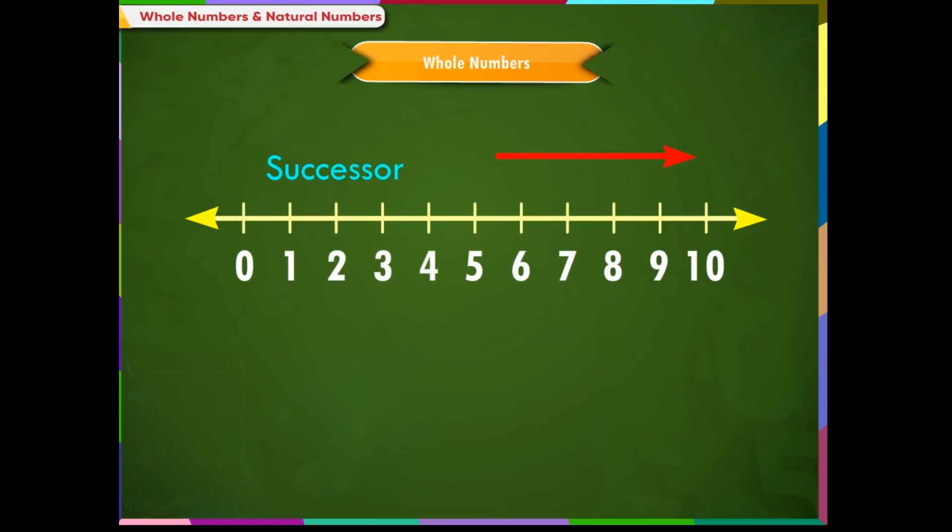The successor of a whole number lies just to the right of a number and the predecessor of a whole number lies just to the left of a number.